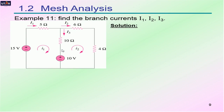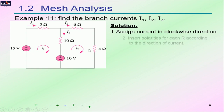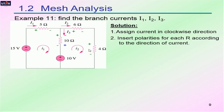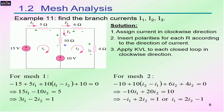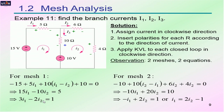Using KVL, we first assign current in the clockwise direction for each mesh, then insert polarities into each element — in this case the resistors. Then we apply Kirchhoff's voltage law in each mesh in the clockwise direction. By doing so, we come up with two sets of equations: one to describe the first mesh and one for the second mesh. With two sets of equations and two unknowns, we solve to find I1 and I2, which is much simpler.